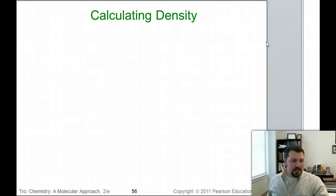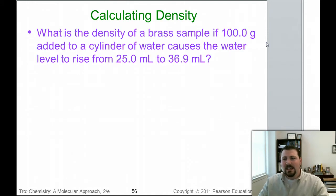We want to calculate density. What is the density of a brass sample if 100 grams added to a cylinder of water causes the water level to rise from 25 milliliters to 36.9 milliliters? How much did that water level change is what we're interested in. If we can calculate that, since we know 100 grams, we'll just take mass, grams, over volume, milliliters, cubic centimeters, and we'll be able to have density. So what is the density?